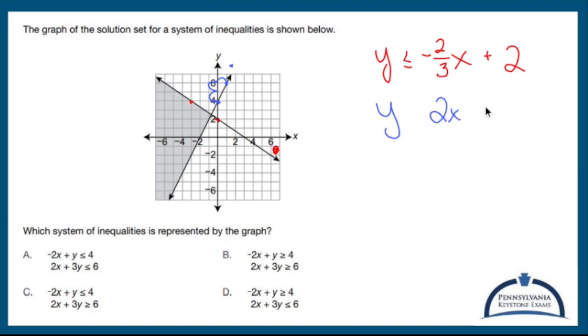My y-intercept is plus 4. And in order for my shading to be above the line, it's got to be a greater than or equal to because it's a solid line. So this is my system of inequalities.